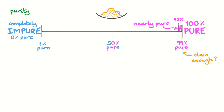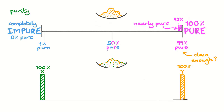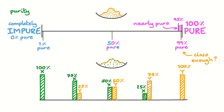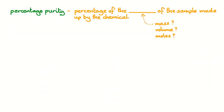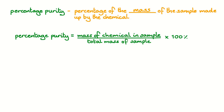Of course, we don't need to only talk about one chemical when discussing the purity of a sample — we could talk about the purity for all the chemicals in a sample. So a mixture of chemical X and chemical Y will be somewhere in between 100% X and 100% Y. It could be 50% of one or 50% of the other, or anything in between. When talking about percentage purity, you could talk about a number of things, like the mass, the volume, or the amount in moles. But the most common we use is mass. So we calculate percentage purity by taking the mass due to the chemical we're interested in, dividing by the total mass of the sample, and multiplying by 100%.